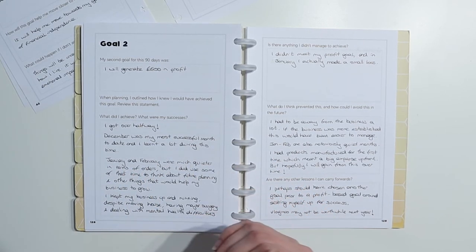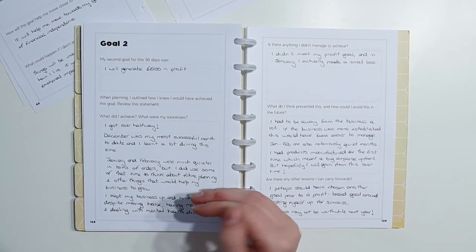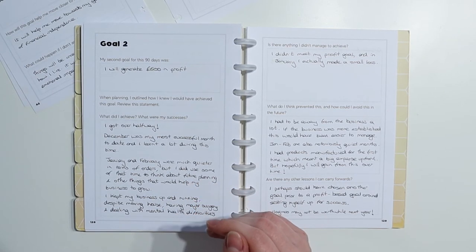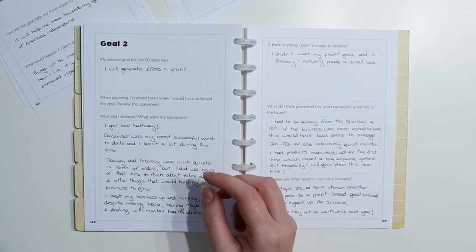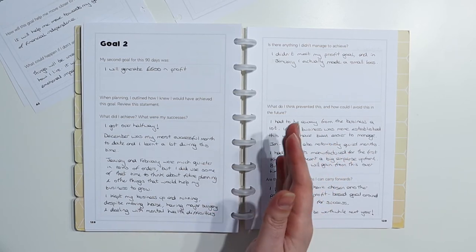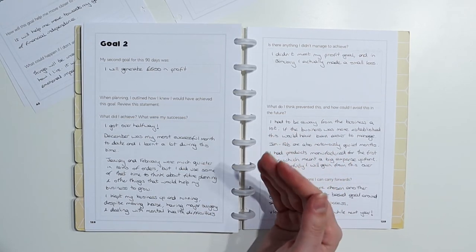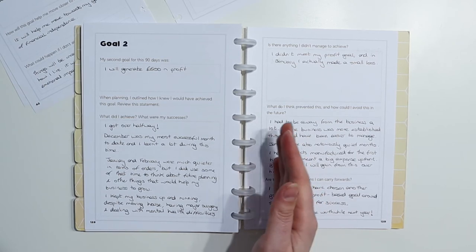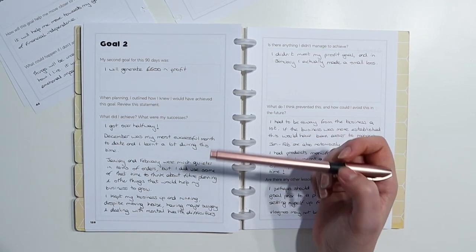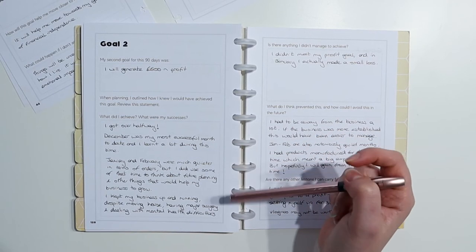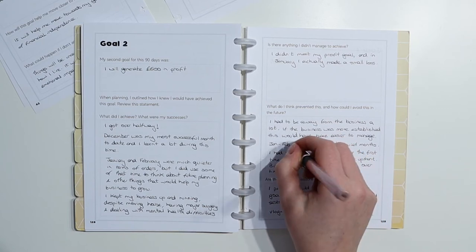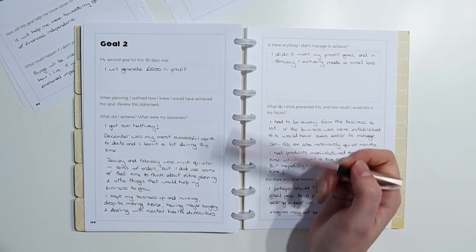My YouTube channel did get the most views in December. So, that is an achievement. Because, obviously, it does bring in that bit of extra ad revenue. But in terms of, because the amount YouTube pays is so low, even though my views were a lot higher, the difference in payout was probably about £20. So, I would say the biggest difference was in my shop. So, December was my most successful month to date in the shop, and I learned a lot during this time.